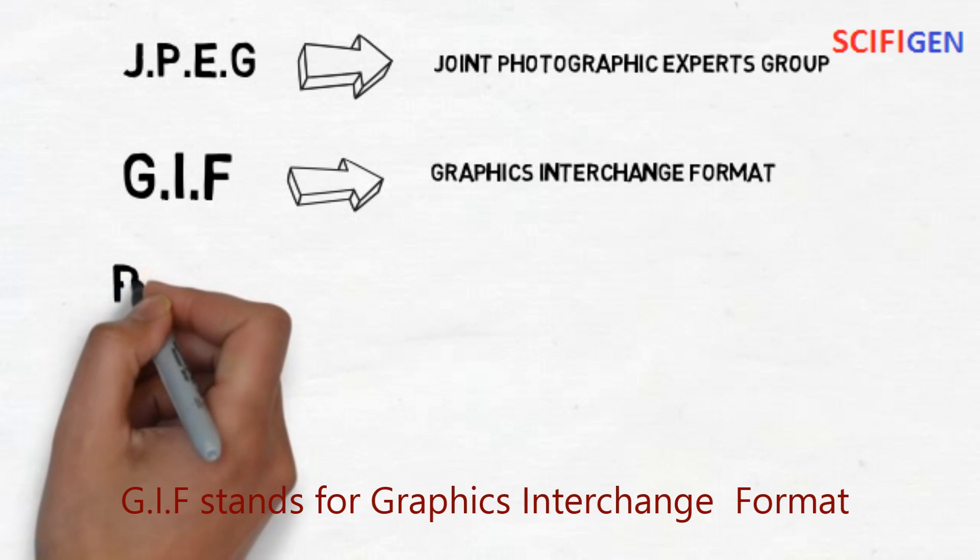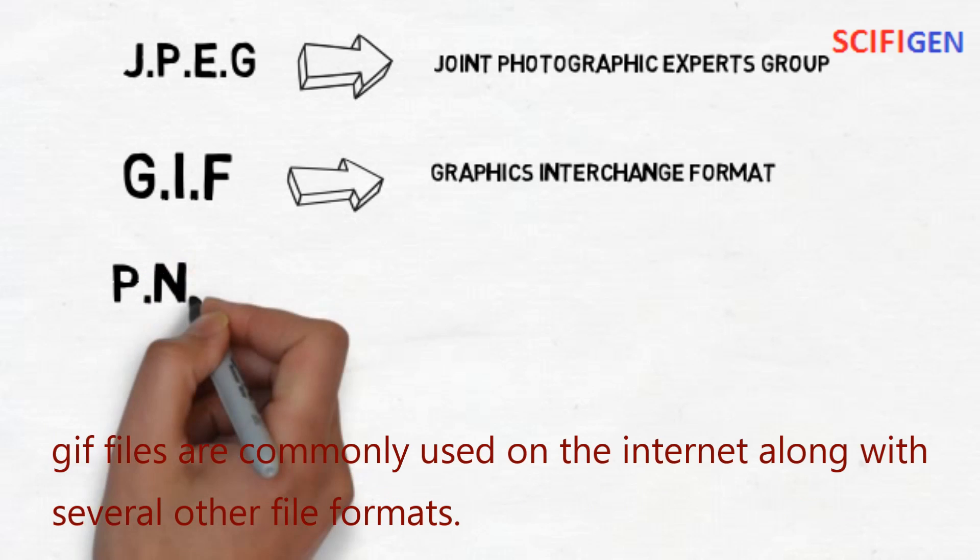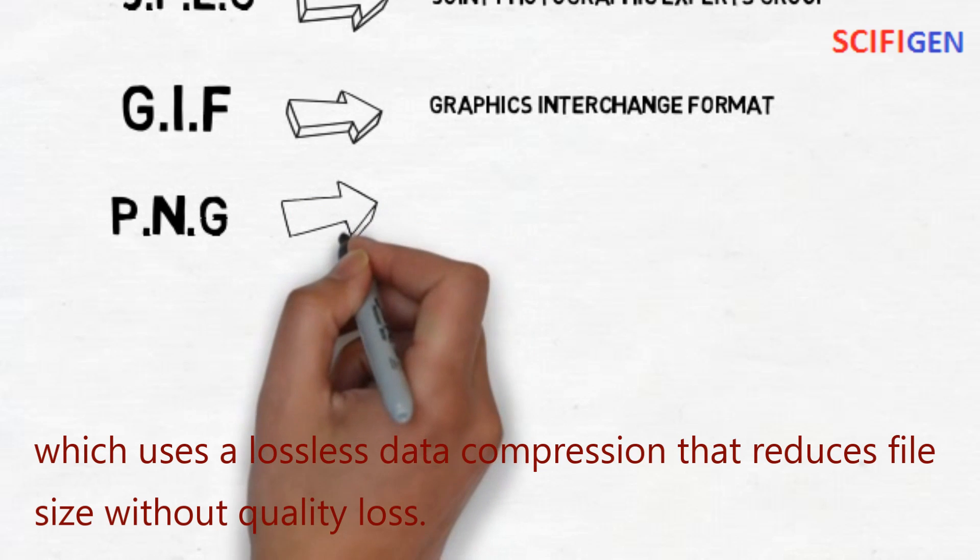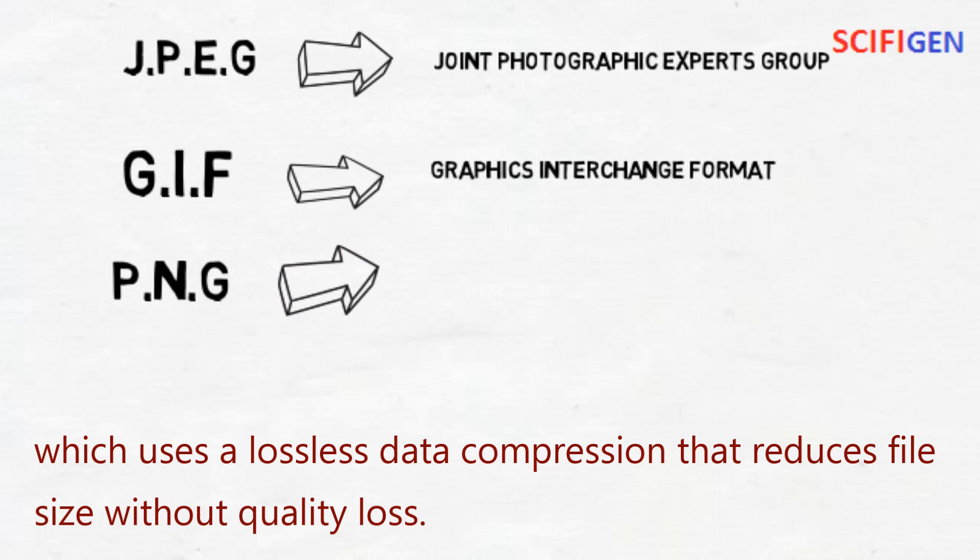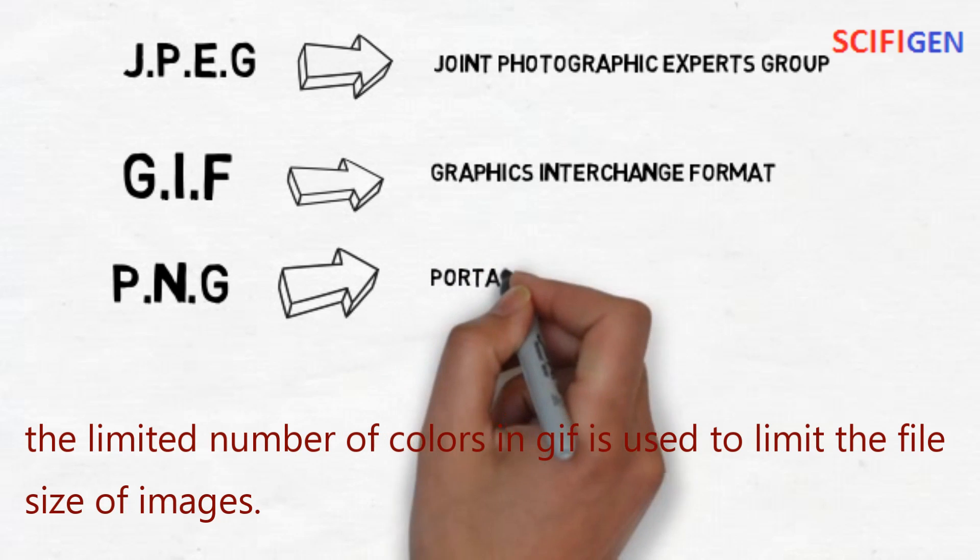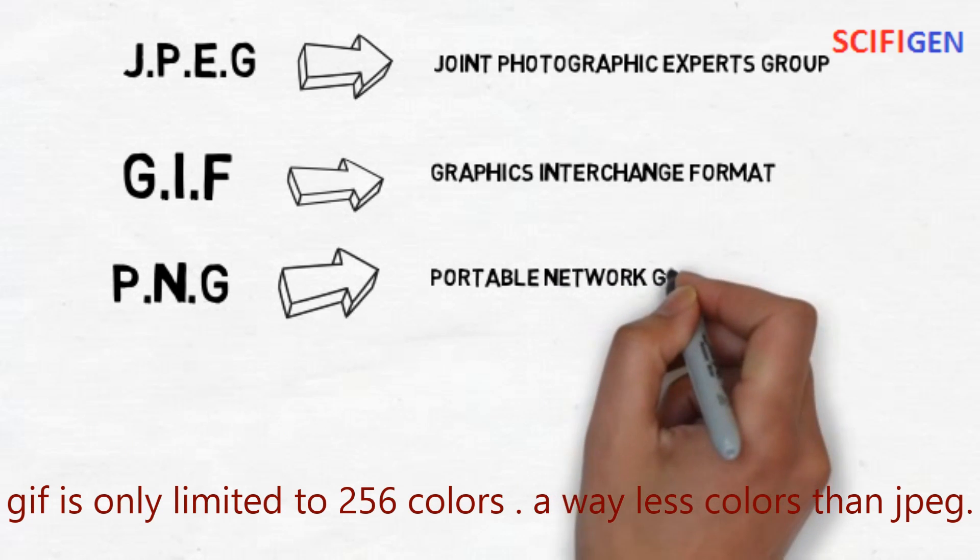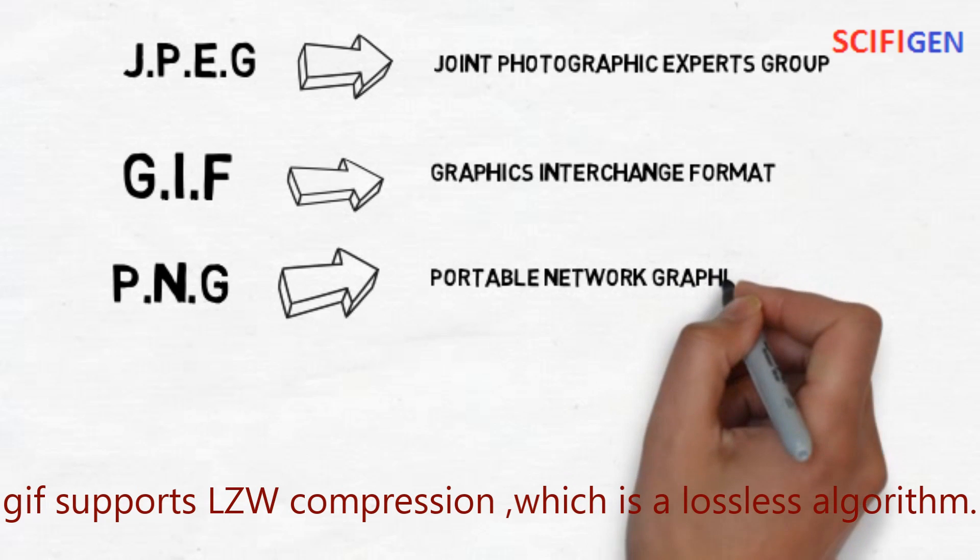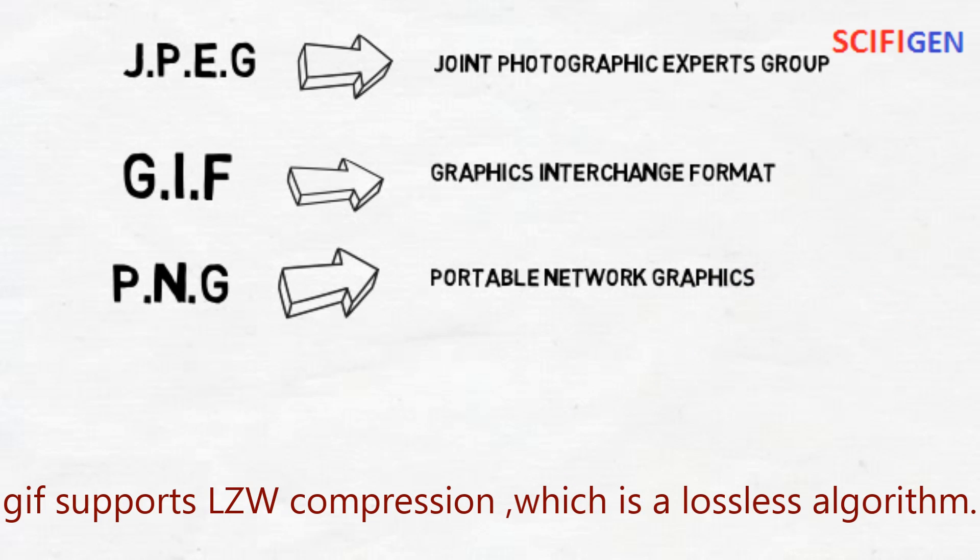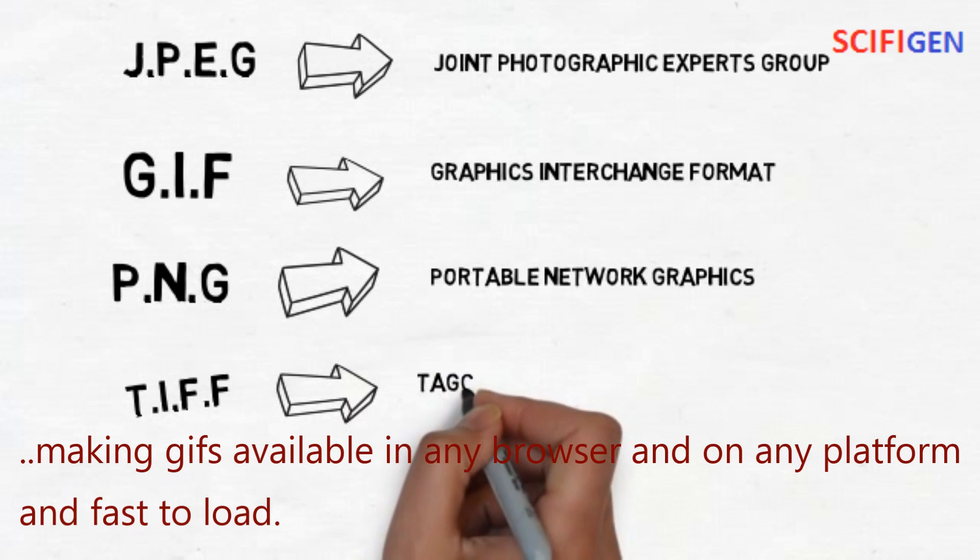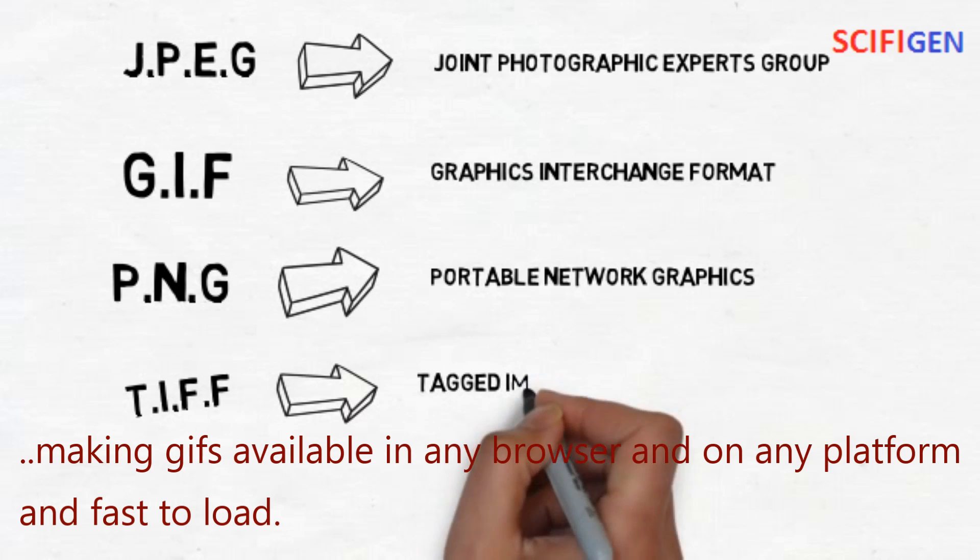GIF stands for Graphics Interchange Format. GIF files are commonly used on the internet along with several other file formats. It uses a lossless data compression technique that reduces file size without quality loss. The limited number of colors in GIF is used to limit the file size of images. GIF is only limited to 256 colors or way less colors than JPEG. GIF supports LZW compression, which is a lossless algorithm. GIFs are widely used on the web due to their portability and small size, making them available in any browser and on any platform and fast to load.